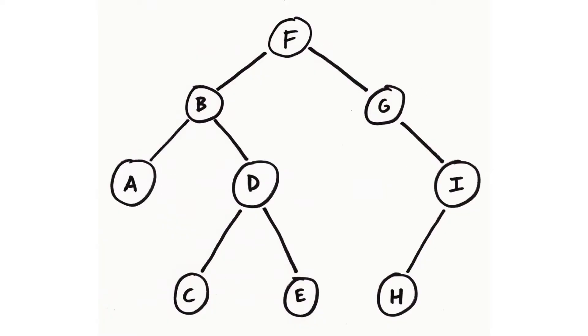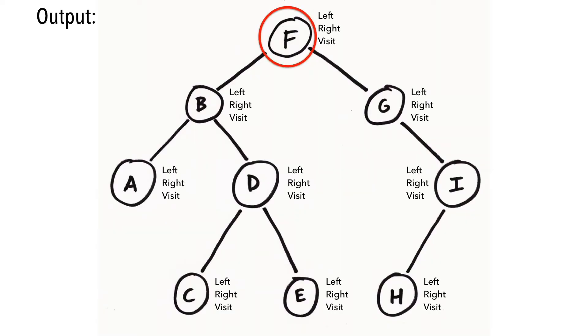Let's jump right in using the example from previous videos. Starting in F, we traverse the left subtree and move to B.